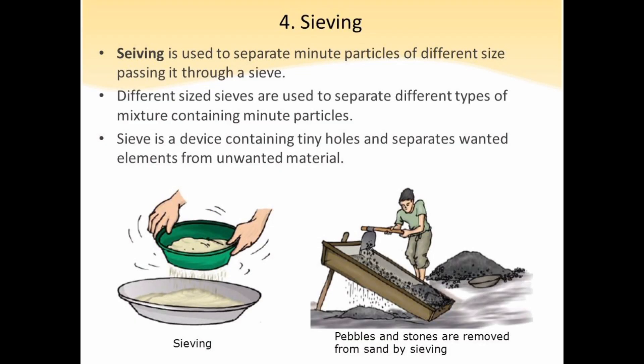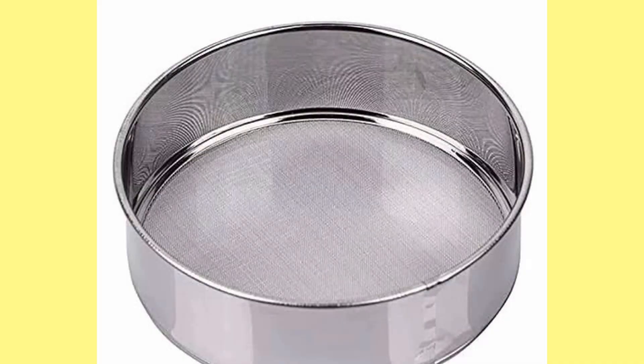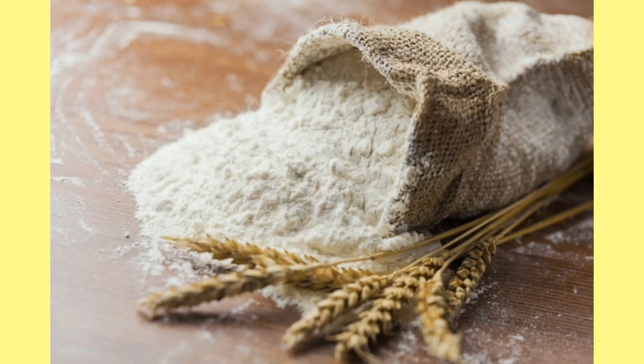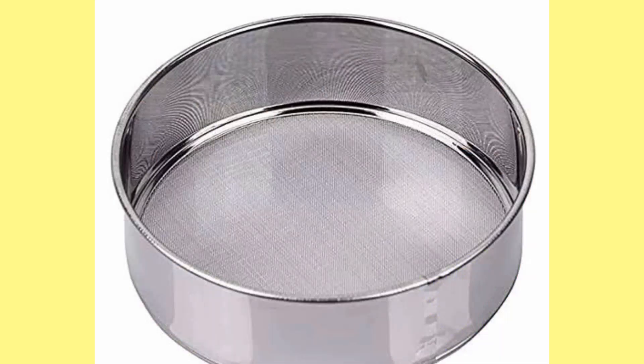The fourth method is sieving. Sieving is a method in which components of different sizes are separated using a sieve. It allows the fine flour particles to pass through the holes of the sieve while the coarser impurities remain in the sieve. One activity: bring a sieve and a small quantity of flour to the class and sieve the flour to separate any impurities from it. Therefore, a sieve is used when components of a mixture have different sizes.